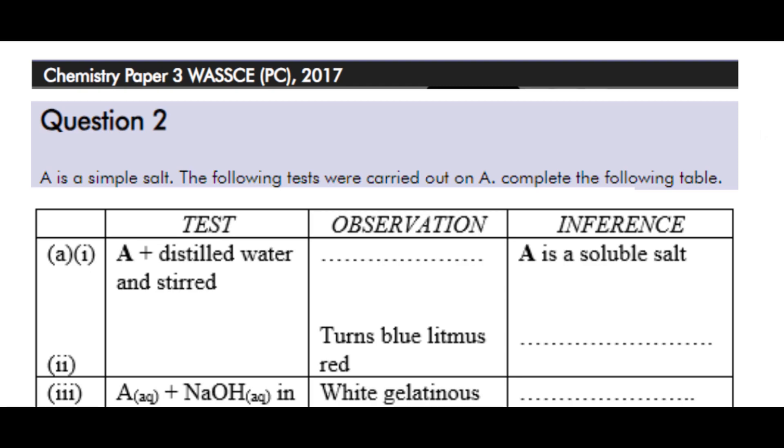Then AII. The observation is blue litmus turns red. And we are required to give the inference. In the observation for AI, since the inference says A is a soluble salt, it means that A dissolved in water. But we also need to state the color of the solution that was formed. And to do that, we have to read through the question to see subsequent tests that were carried out on A.